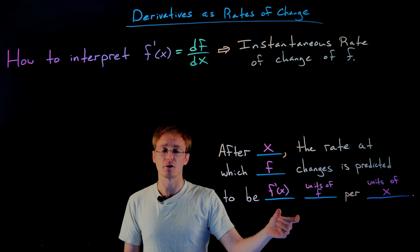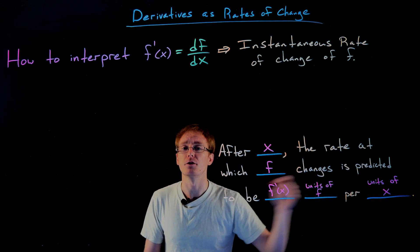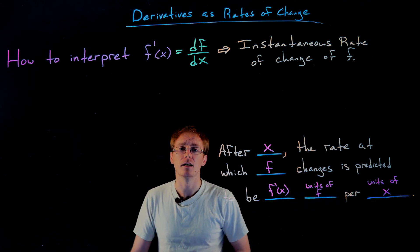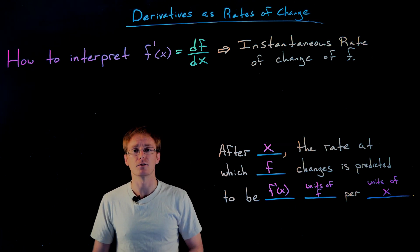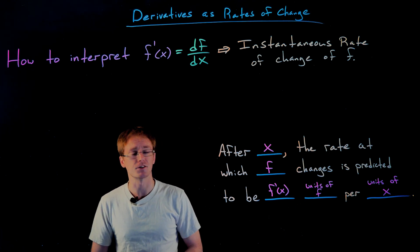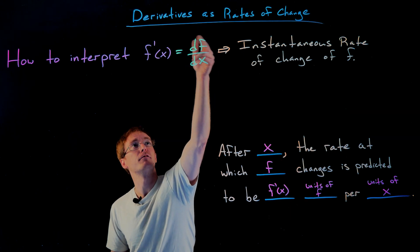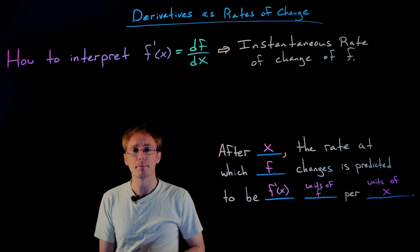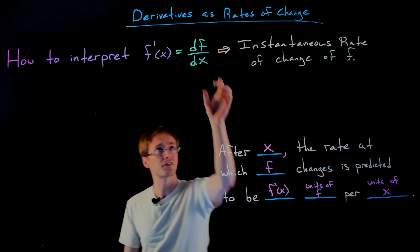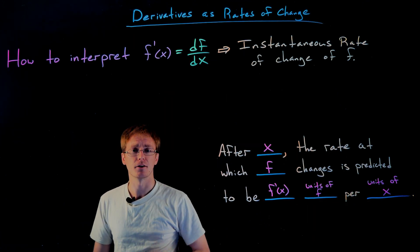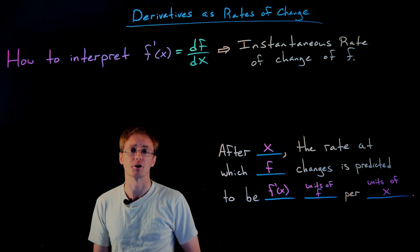The last part describes the units of that rate — the units of our derivative. We can always find them: they're the units of f per the units of x. This goes back to using Leibniz notation, where the units of f come from the df and the units of x are in the denominator corresponding to the dx.